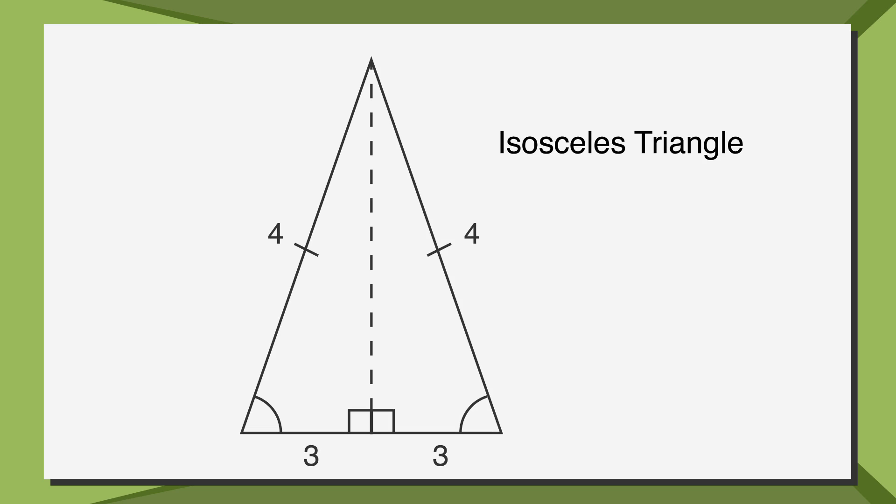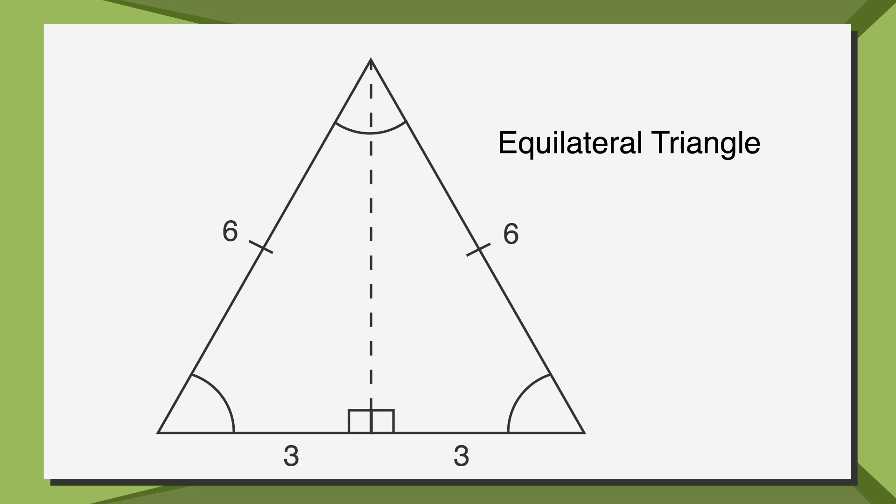Let's start with some basic properties. An isosceles triangle is a triangle where two of the three sides have the same length and the height of the triangle cuts both the vertex and the base in half. An equilateral triangle is a triangle where all three sides are the same length and the height of the triangle also cuts both the vertex and the base in half.